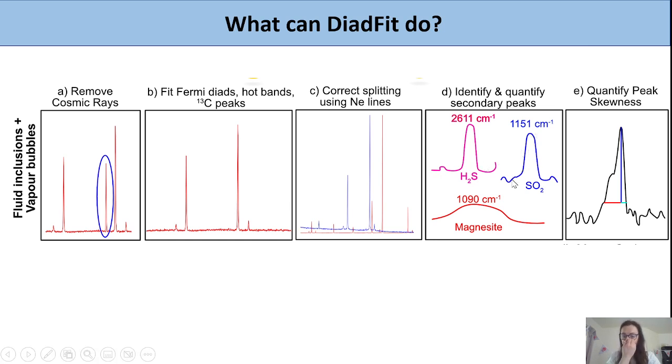Another thing it can do: many acquisitions in fluid inclusions and vapor bubbles contain secondary peaks, which can tell you about phases on the wall of the inclusion. DiadFit can identify these peaks and quantify their heights and areas. This means you can start looking at things like the ratio of the SO2 peak area to the CO2 peak areas to approximately quantify molar proportions.